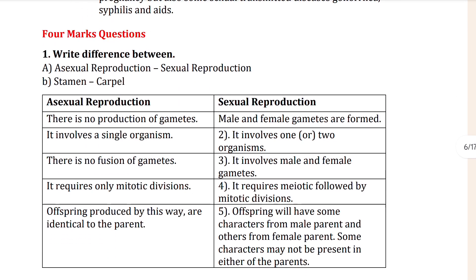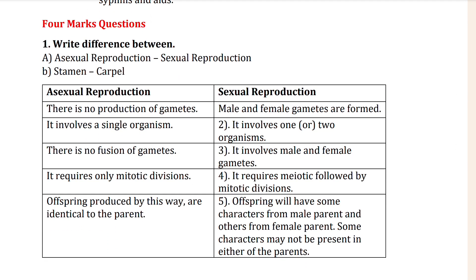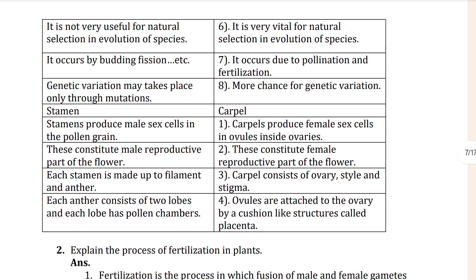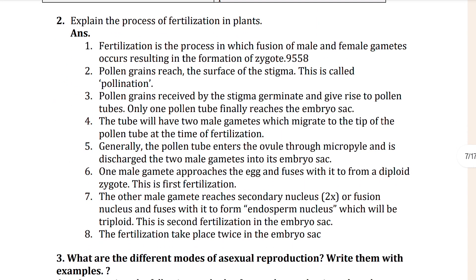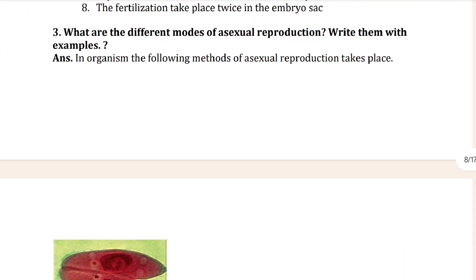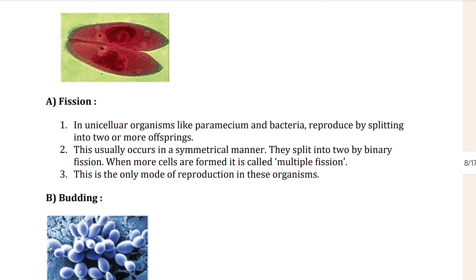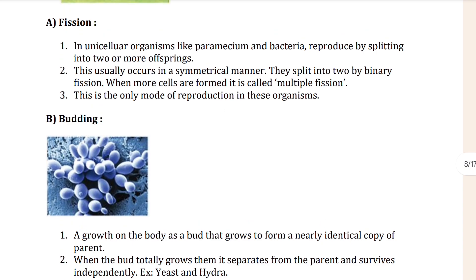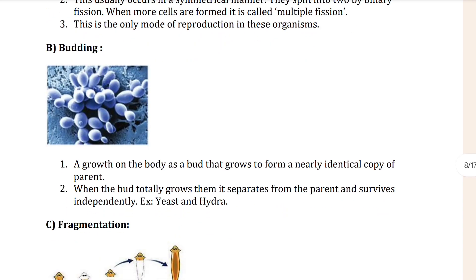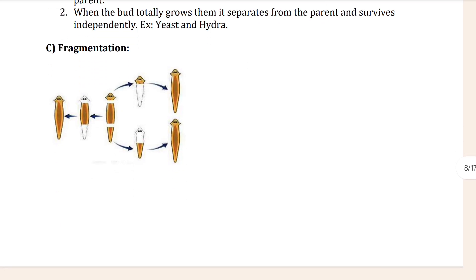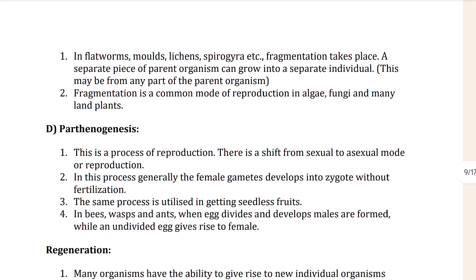After that, the four-mark questions are starting from here. The first four-mark question: difference between asexual reproduction and sexual reproduction - you can see this comparison here. And also given here: explain the process of fertilization in plants - this is the answer. Here you can also see: what are the different modes of sexual reproduction in plants?